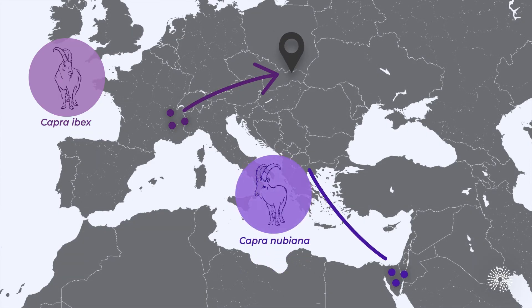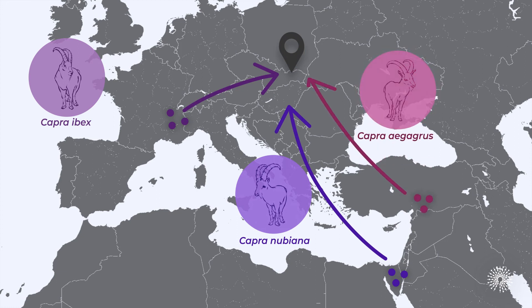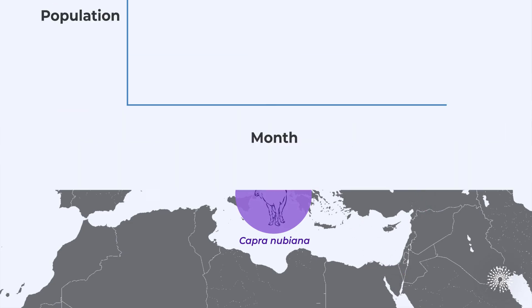To increase genetic variation in the alpine ibex, individuals of two other related species were also introduced. However, these species were adapted to much warmer southern climates. This turned out to be important.